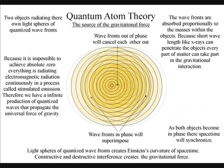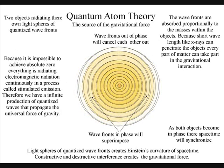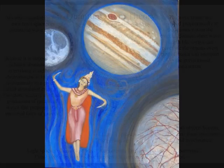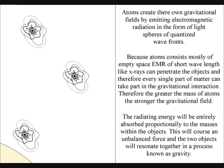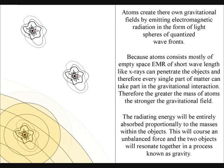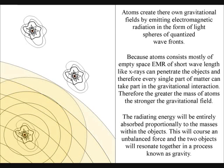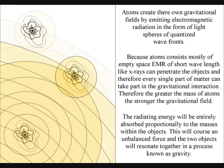The flames are attracted towards the centre of the energy source, in just the same way that the moon is attracted to the centre mass of the earth. By the force of gravity, the radiating energy will be entirely absorbed proportionally to the masses within the objects, and this will create the opposite force of gravity.